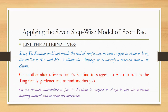Step four is to list the alternatives. Since Father Santino cannot break the seal of confession, he may suggest to Anjo to bring the matter to Mr. and Mrs. Villa Ursula himself — after all, Anjo claims he is already a renewed man. Another alternative is for Father Santino to suggest to Anjo to stop working as the Villa Ursula family gardener and find another job to avoid endangering the family. A third alternative is for Father Santino to suggest to Anjo to face his criminal liability abroad and clean his conscience.